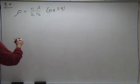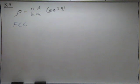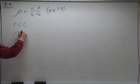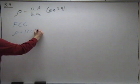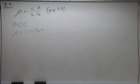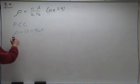One of the key givens is that palladium has an FCC crystal structure — face-centered cubic. We have a given density of 12.0 grams per cubic centimeter, and finally an atomic weight of 106.4 grams per mole.